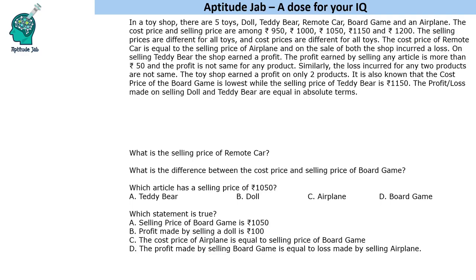Hello everyone, welcome to Aptitude Jab. This is a caselet. It says that in a toy shop there are 5 toys: doll, teddy bear, remote car, board game, and an airplane. The cost price and selling price are among these values. The selling prices are different for all the toys, and cost prices are different for all toys — 5 items, 5 prices given.